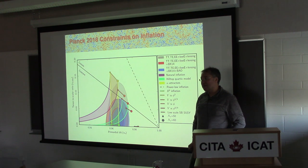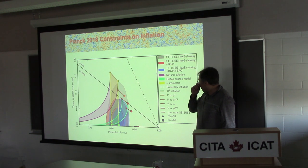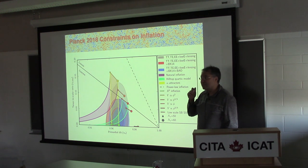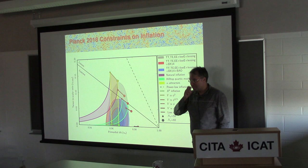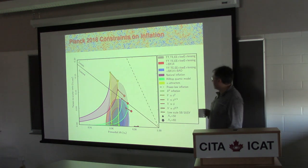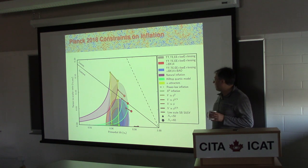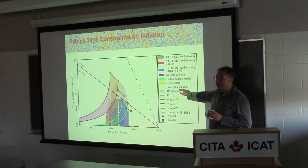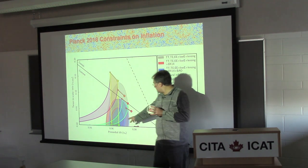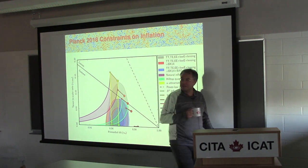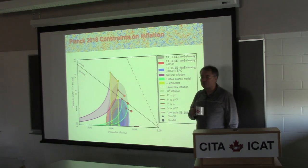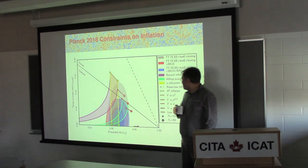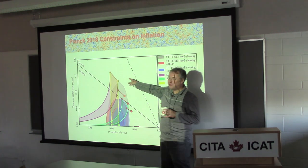These self-attractor models flatten the effective potential by essentially coupling the motion of the inflaton to gravity in a non-trivial way. There are more models of inflation than inflationary physicists, because most of them have at least N papers about it. One of the curious ones is R-squared inflation - that's the original Starobinsky paper, before inflation was even inflation. And that one actually sits right smack in the middle of the confidence ellipse - which would be the greatest cosmic irony ever.